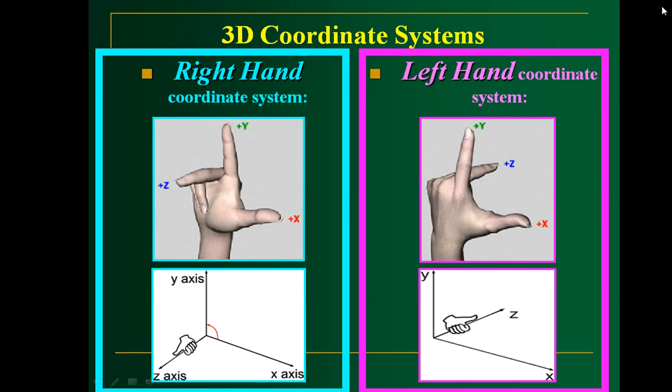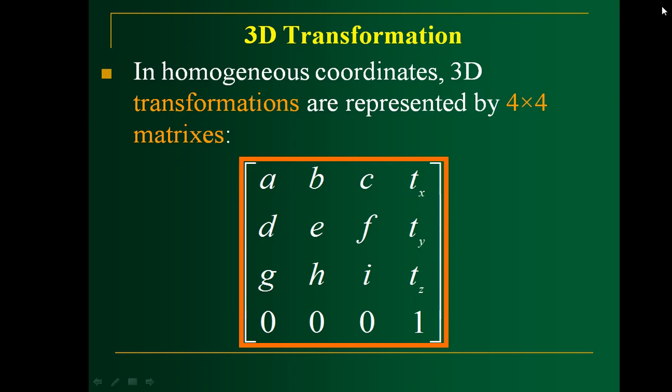Now let us discuss something about the coordinate systems. Here you have two different coordinate systems for any 3D object. One is the right-hand coordinate system and the other is the left-hand coordinate system. In the right-hand coordinate system, the Z-axis is projecting outwards, whereas in the left-hand coordinate system it is projecting inwards. You can make use of either of these two coordinate systems to apply transformations or to represent any object in 3D space.